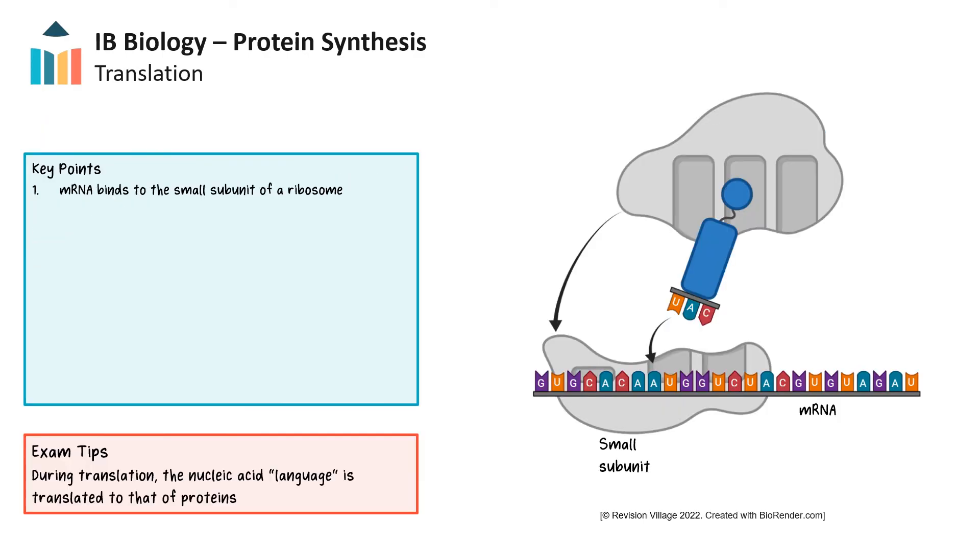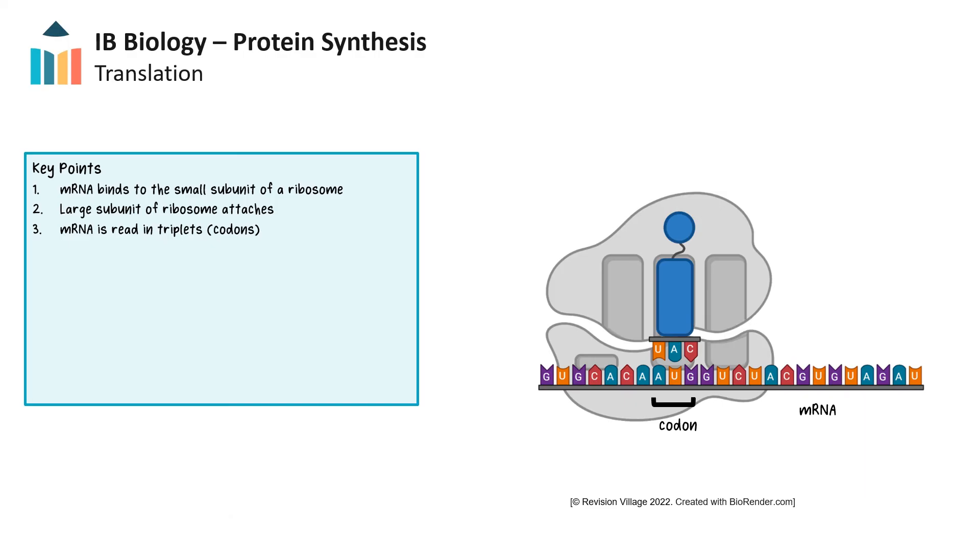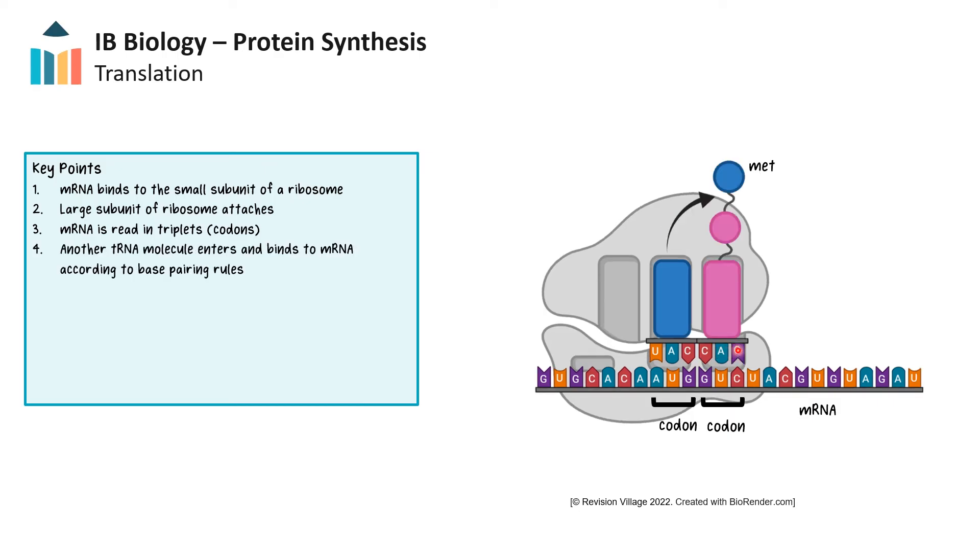In the first stage of translation, the mRNA attaches to the small subunit of a ribosome. The large subunit will then attach, which has binding sites for tRNA. The mRNA is read in triplets or codons. The first codon is AUG. So the complementary bases on the tRNA or anticodon would be UAC. Notice that the amino acid attached to the tRNA is VAL. When two molecules of tRNA are situated next to each other in the ribosome, the ribosome will catalyze a covalent peptide bond to form between them. This is the start of the polypeptide chain.